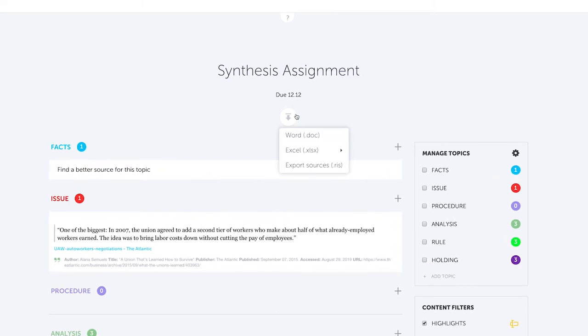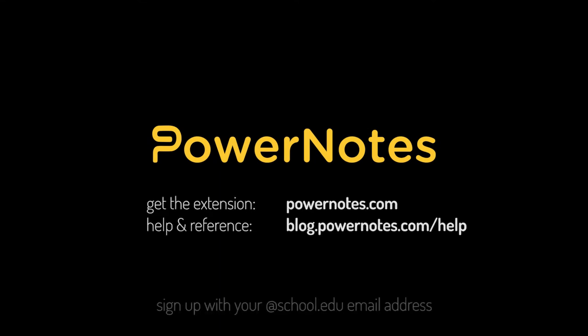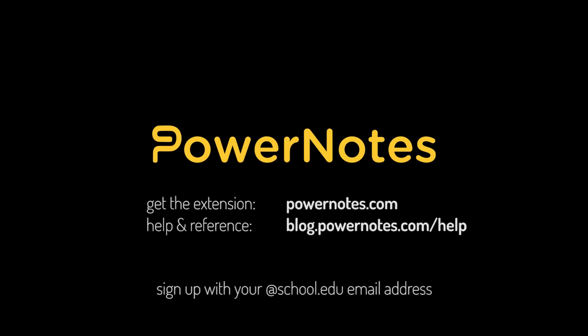There are several ways to download content from the project outline. When students are ready to write, they can download a word processing document that can be opened with Microsoft Word or Google Docs. They can also download content to Excel files that can help them visualize and synthesize their research. Additionally, students can download all sources into an RIS file that can be imported into most citation generation tools. Students are also using PowerNotes for general note-taking, as it works on Canvas, Blackboard, and other learning management systems. They have used PowerNotes to take class notes and to generate personalized study guides for their non-writing classes. Find more on this and other help materials on the PowerNotes blog at blog.powernotes.com. For a full demo, please contact us directly.